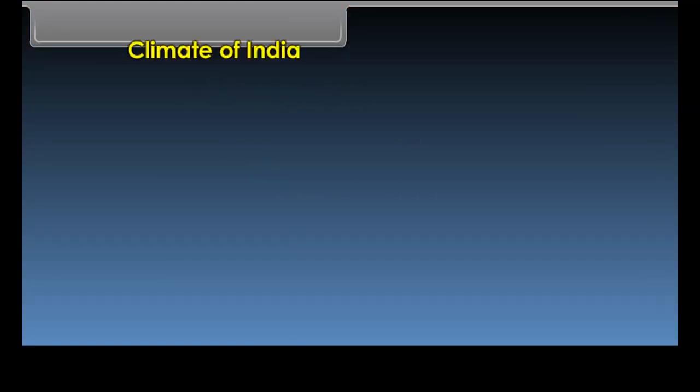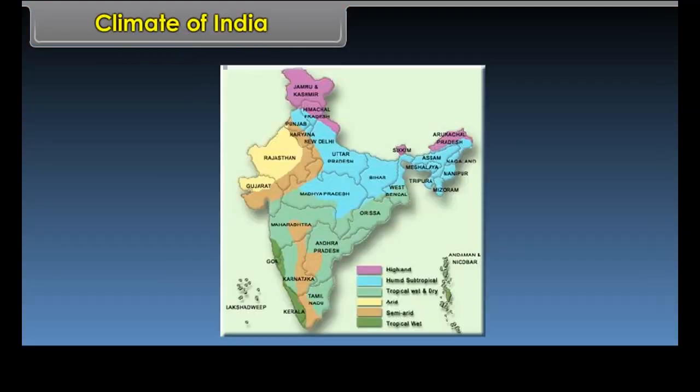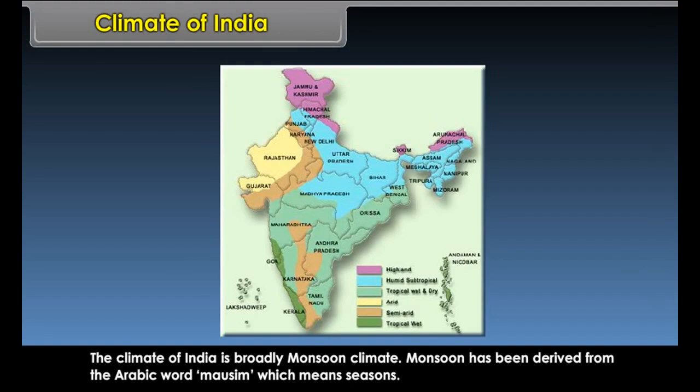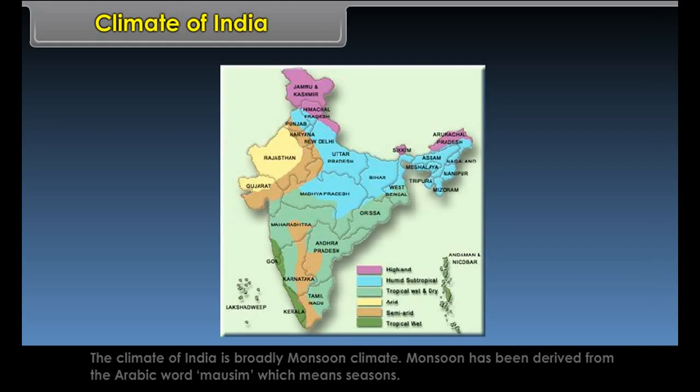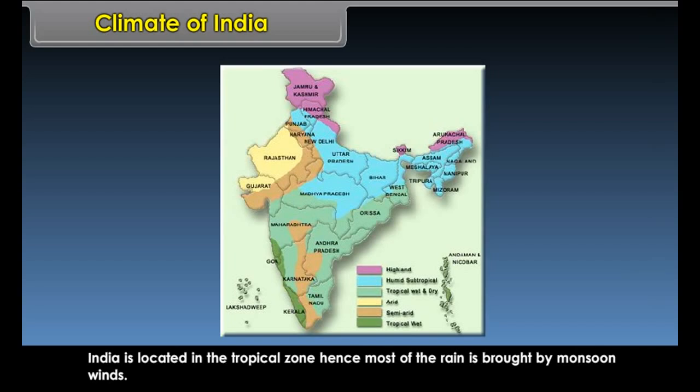The climate of India is broadly monsoon climate. Monsoon has been derived from the Arabic word 'mossim' which means seasons. India is located in the tropical zone; hence most of the rain is brought by monsoon winds.